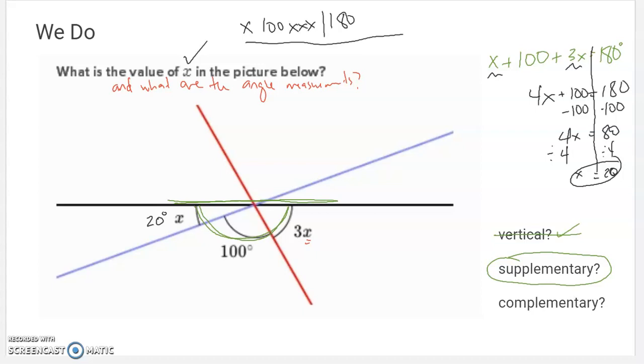There's a little bit of work left to be done. If we substitute that x back in to 3x, then we get 3 times 20. Makes this a 60 degree angle. And if we verify, that should be correct, right? 20 plus 100 plus 60 does in fact equal 180 degrees.